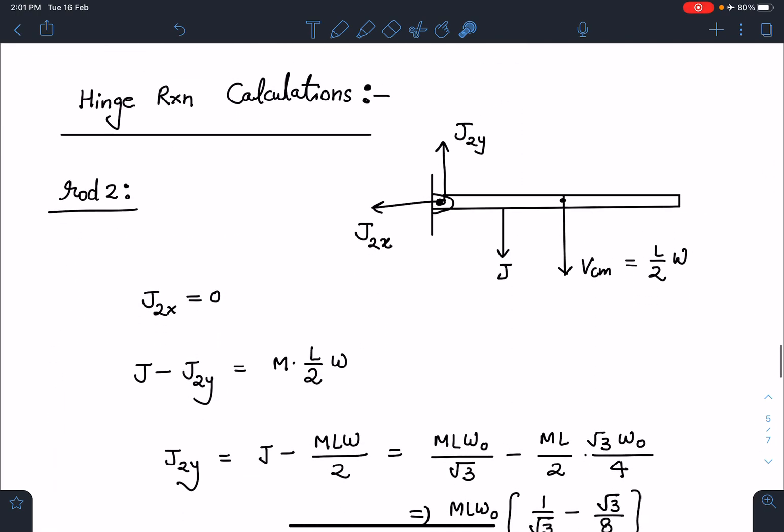Now the tricky part is hinge reaction calculations. If we see here, the hinge acting on rod 2 is at L by 4 distance. Let's say J2x and J2y here. Force is existing but it is not going to provide any impulse because there is no change in linear momentum along the length of the rod. So J2x is going to be zero directly I can get.